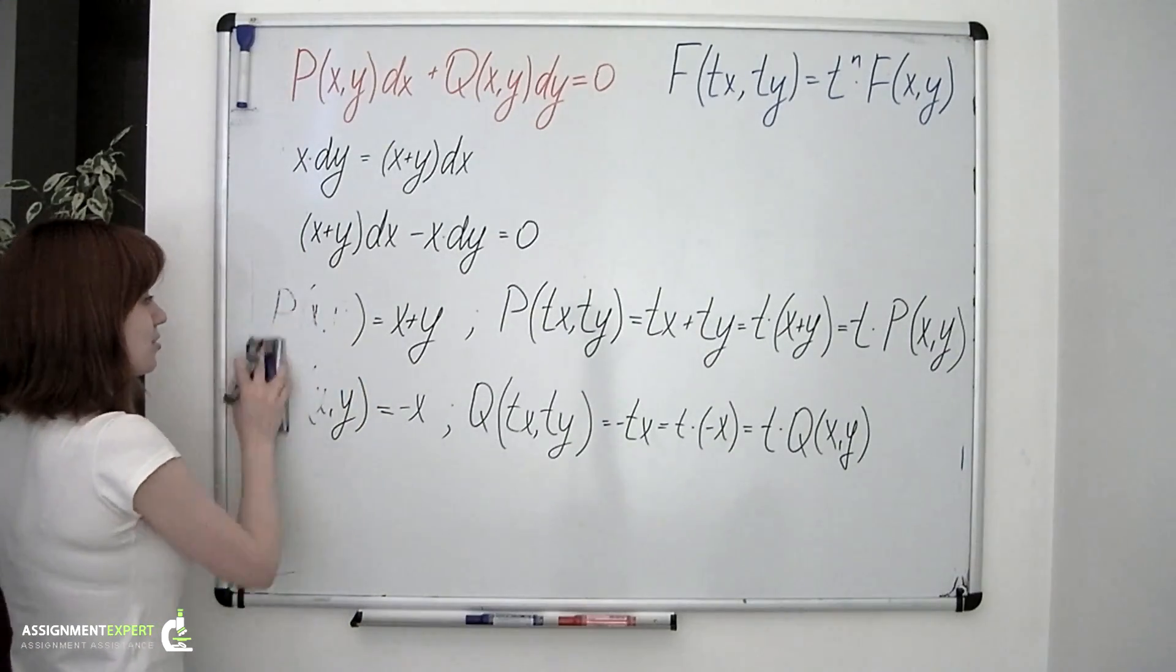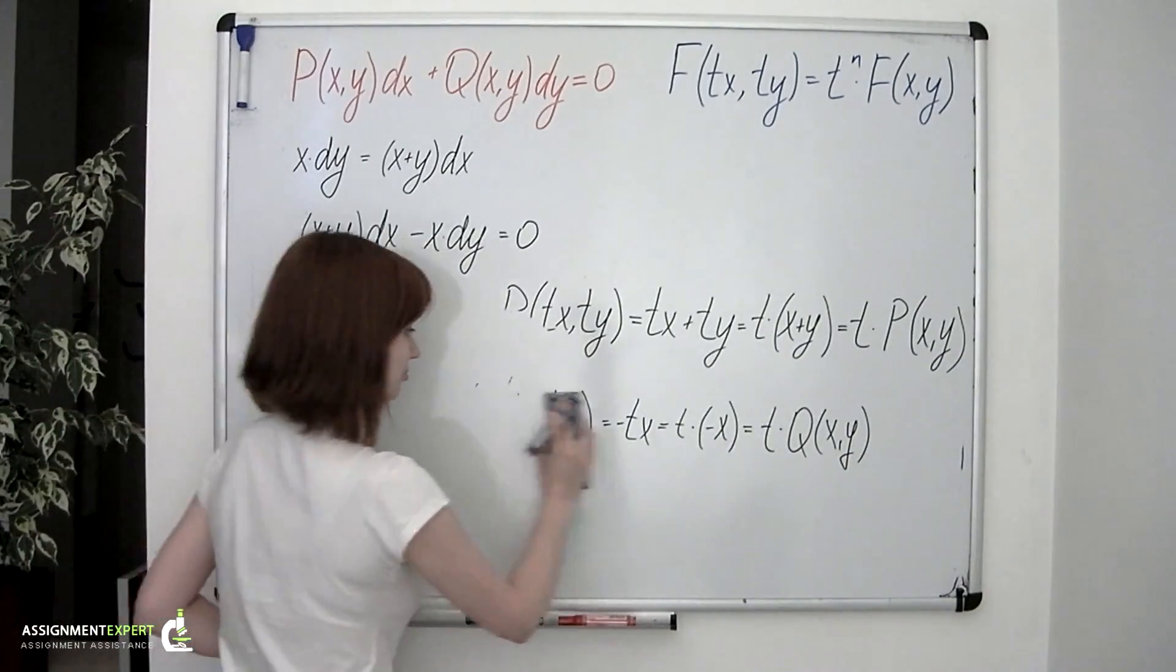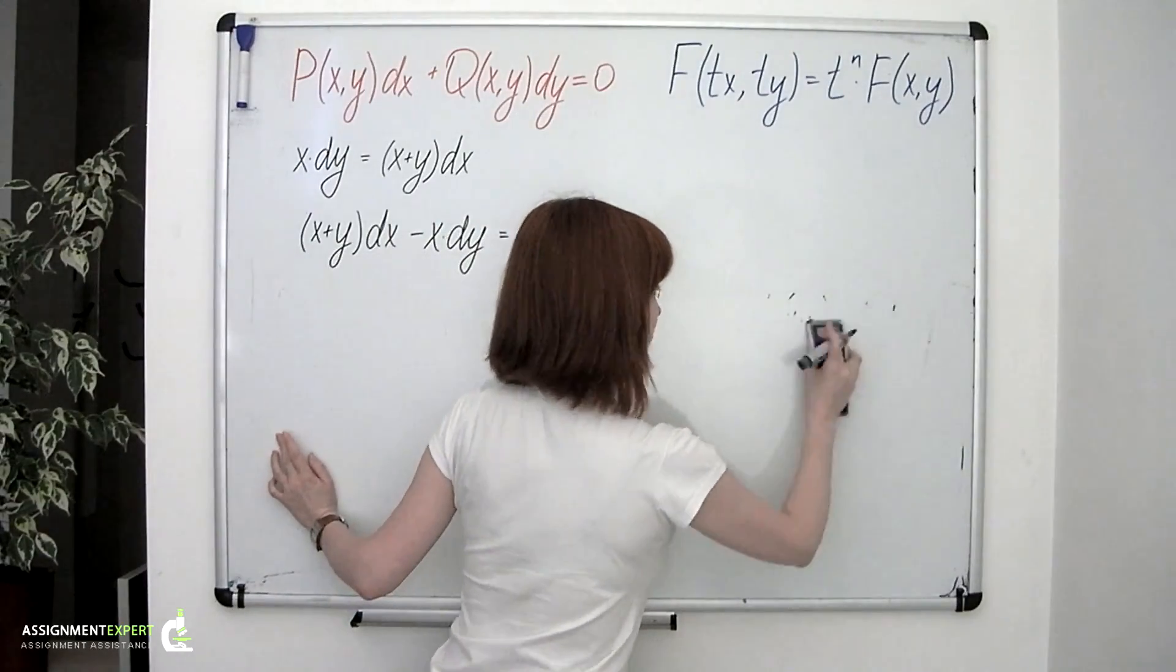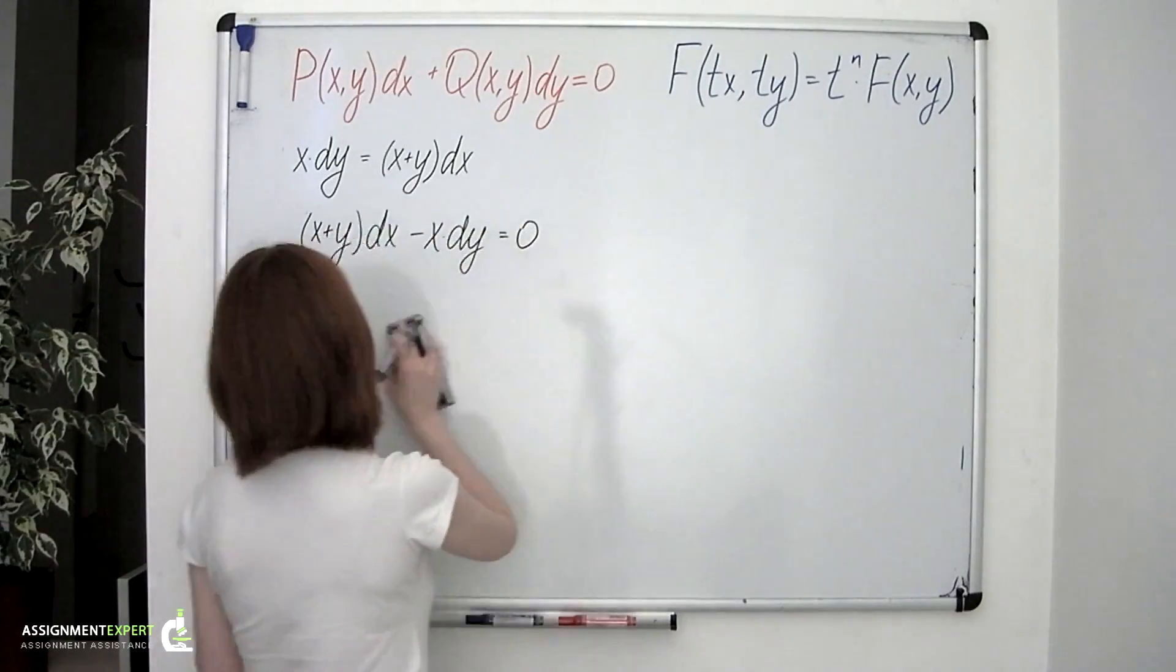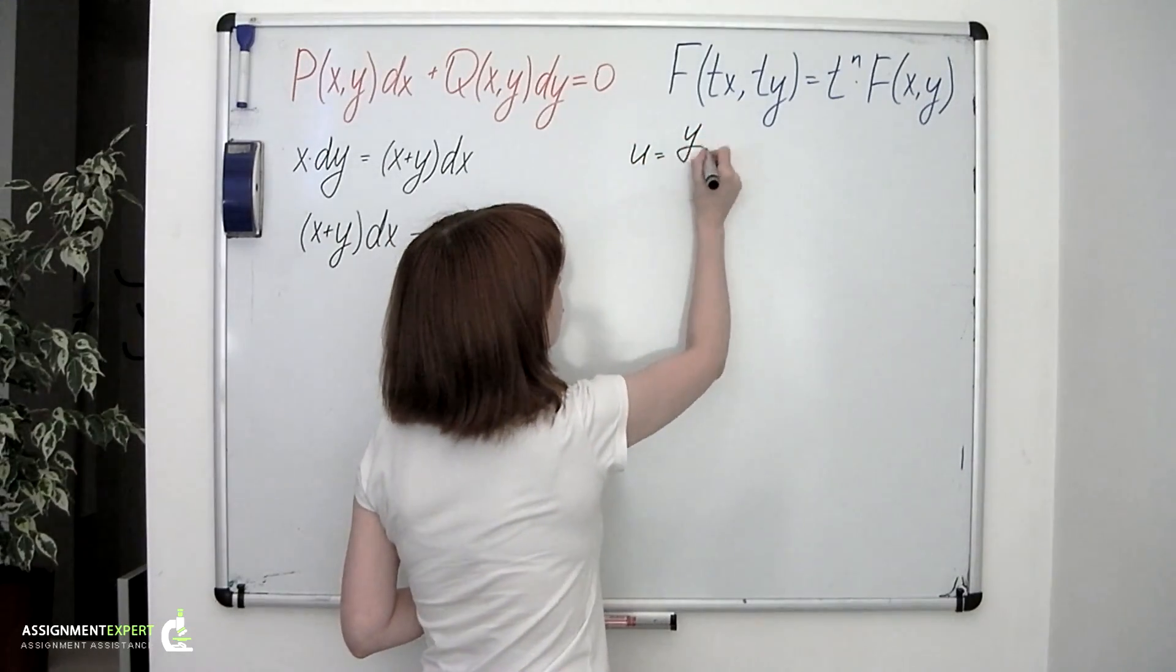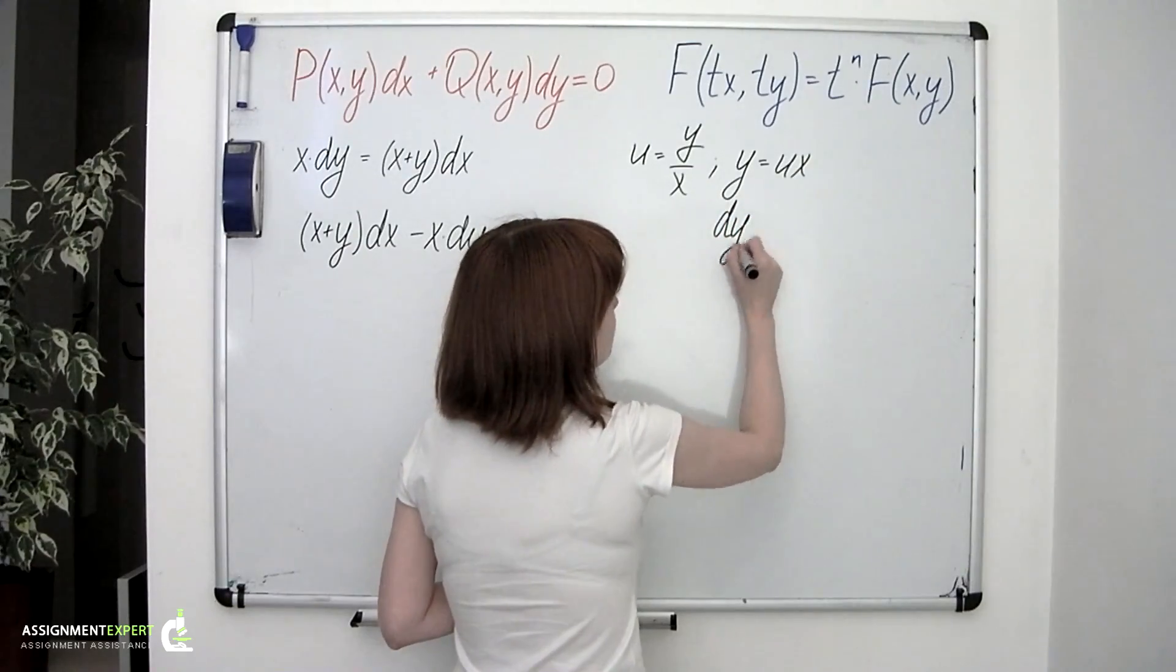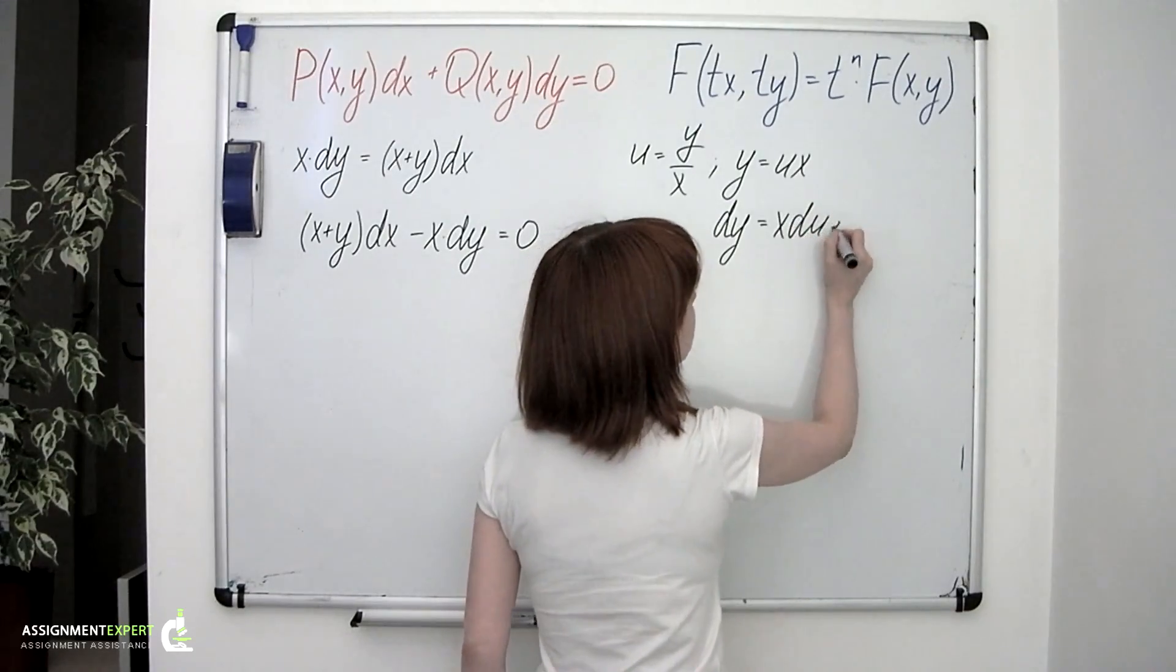And this leads us to step number three, where we make a substitution. We introduce new variable u, which is equal to y over x. Therefore, y equals u times x. And dy is found as a differential of a product. So it equals x times du plus u times dx.